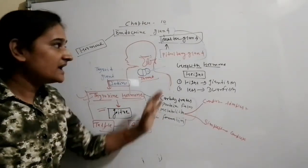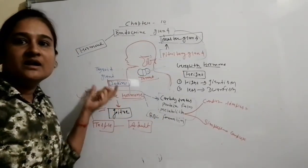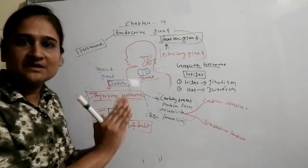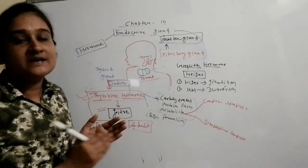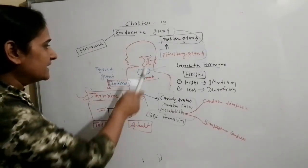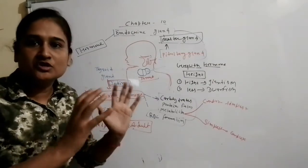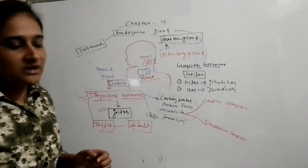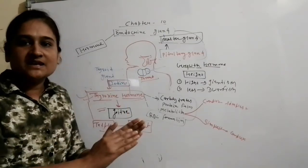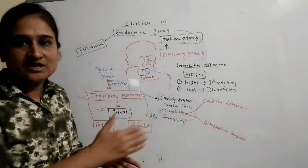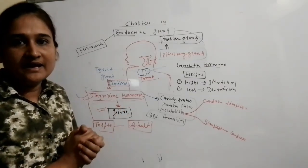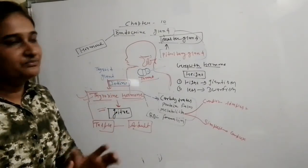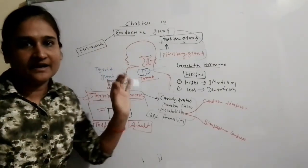Today we studied two glands: the pituitary gland and the thyroid gland. All students should understand this topic well. The pituitary gland is located in the forebrain region; the thyroid gland is located on both sides of the windpipe. In the next class, we will cover the remaining glands: adrenal gland, pancreas, testis, and ovary, along with their related hormones and functions. The endocrine gland topic continues.